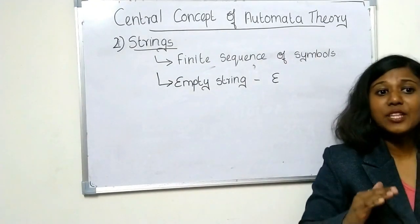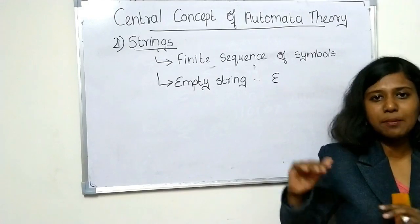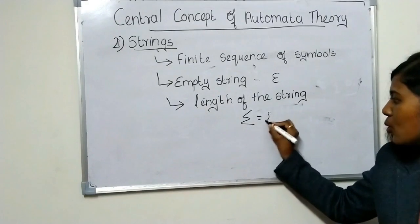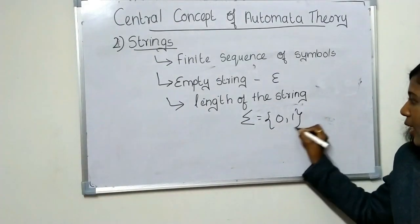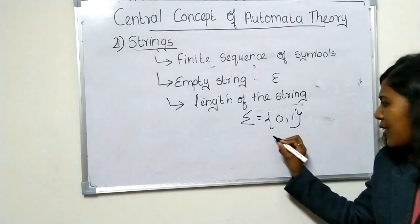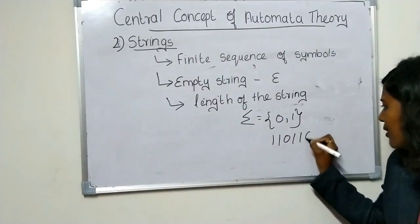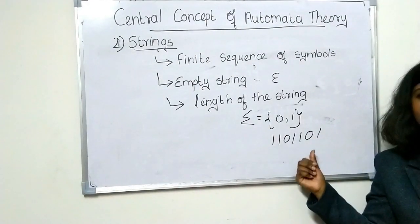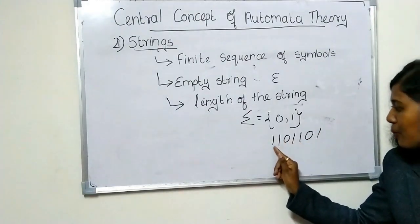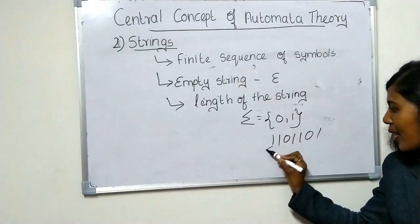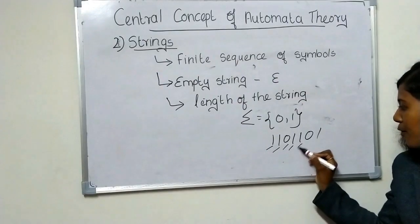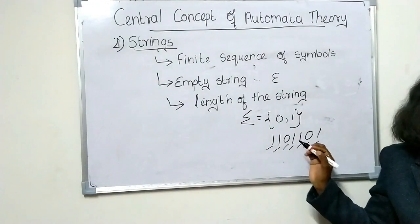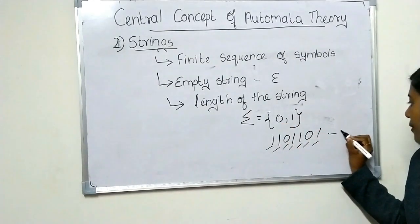The length of a string is the number of symbols in the string. Suppose we take the Binary Alphabet with Sigma equal to {0, 1} and the string 1,1,0,1,1,0,1. Counting each symbol gives us 1, 2, 3, 4, 5, 6, 7 — so the length of this string is 7.